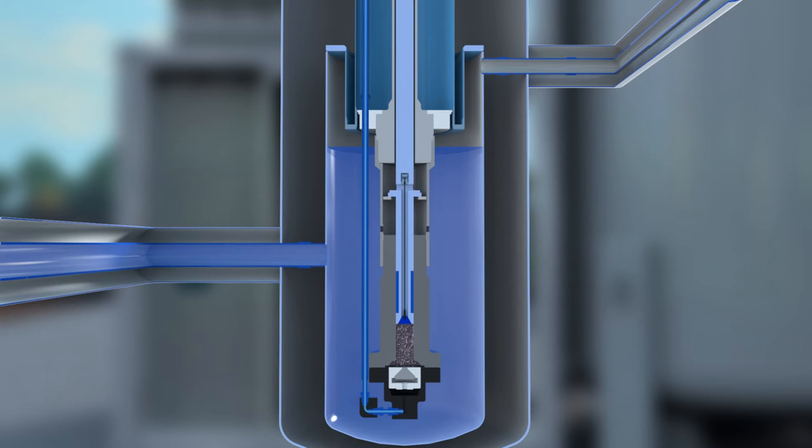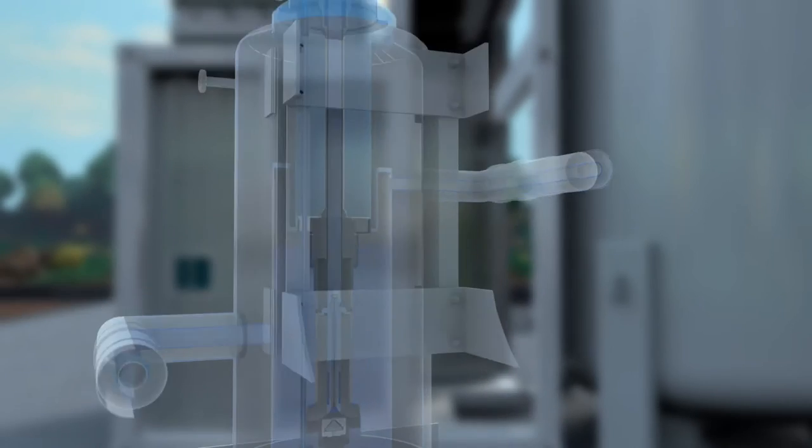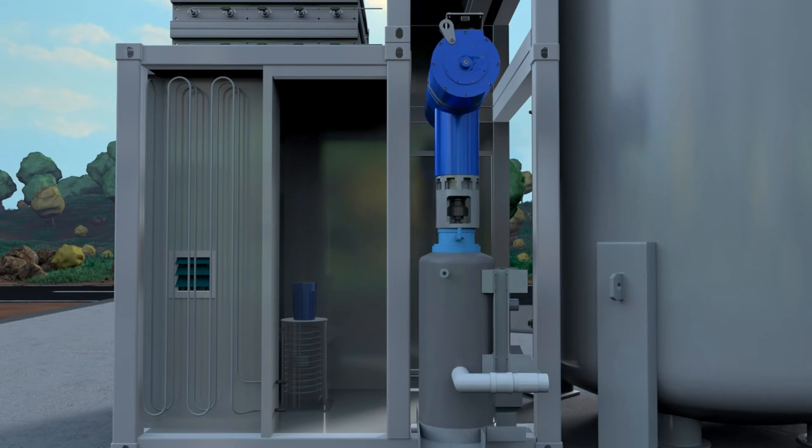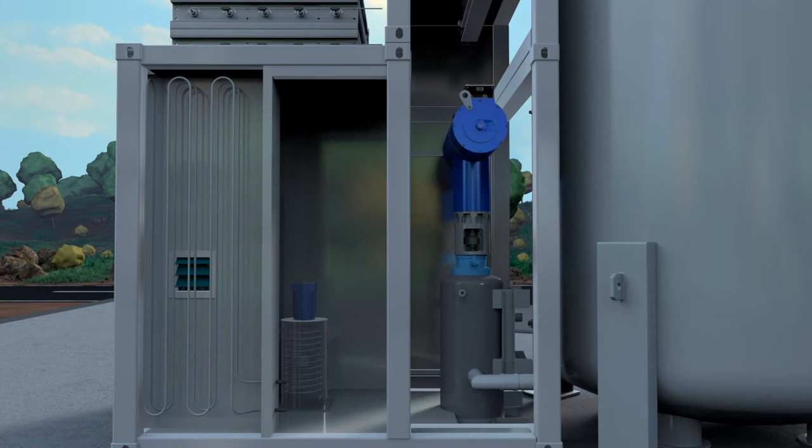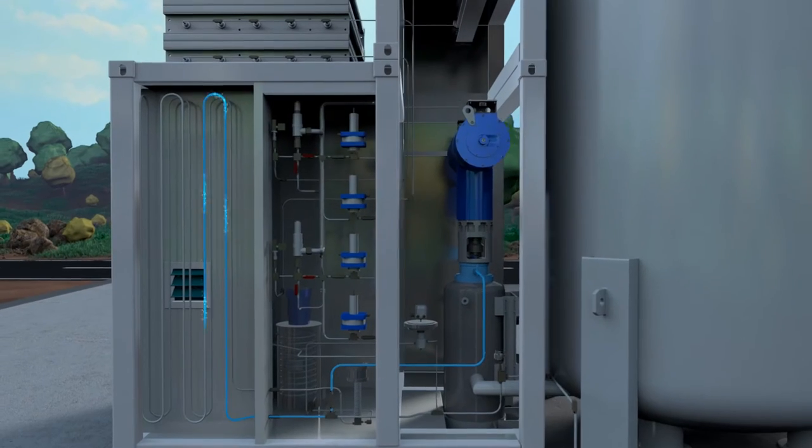The downward movement of the piston then compresses the hydrogen in the second chamber to a final pressure of 900 bar. The hydrogen is now gaseous. Due to the direct compression of liquid hydrogen, the Cryo Pump consumes only a fraction of the energy required by a conventional compressor.